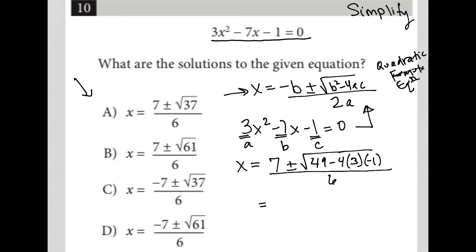Continuing to simplify, I have 7 plus or minus the square root. Negative 4 times 3 is negative 12, times negative 1 is positive 12, making this whole thing become positive 12. So 49 plus 12 - this is the non-calculator section, so let's make sure: 49 plus 12, 9 plus 2 is 11, making this 61.